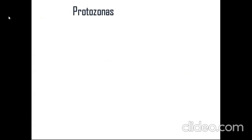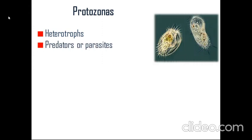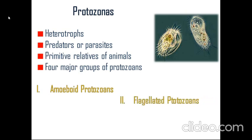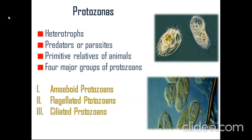The last type is the protozoans. They are heterotrophs, mainly predators or parasites. They are primitive relatives of animals. They have four groups: amoeboid protozoans, flagellated protozoans, ciliated protozoans, and sporozoans.